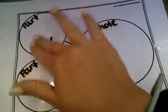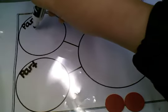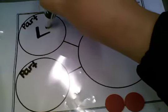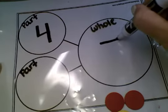Sometimes when we're doing part, part, whole, one of the parts might be missing instead of the whole. Maybe I have four in my part and seven in my whole altogether. I'm trying to find out how many are missing in the part.